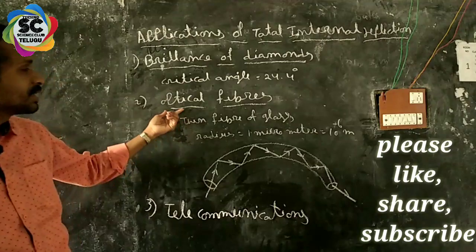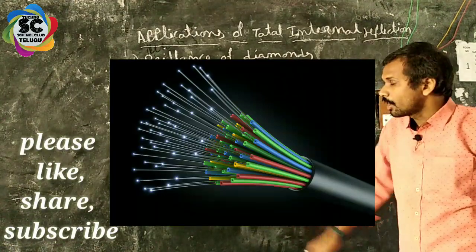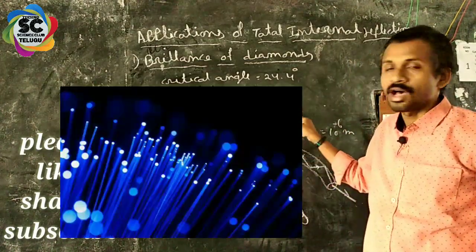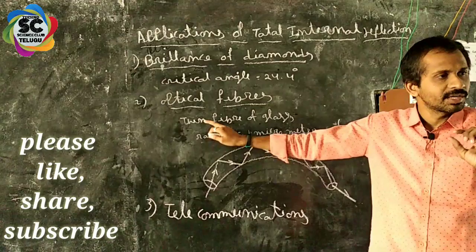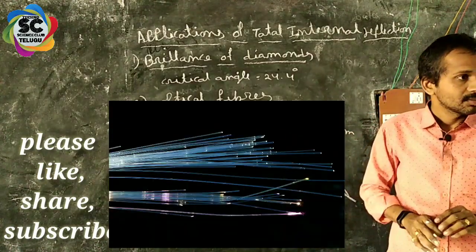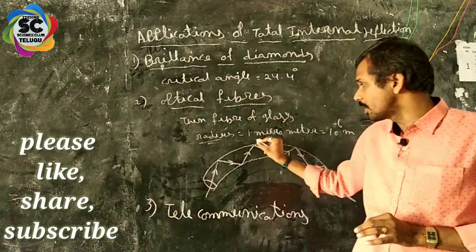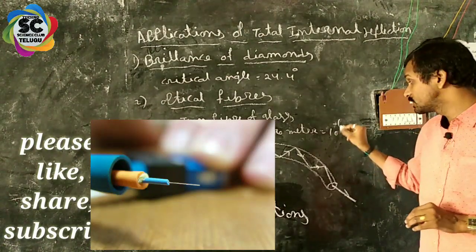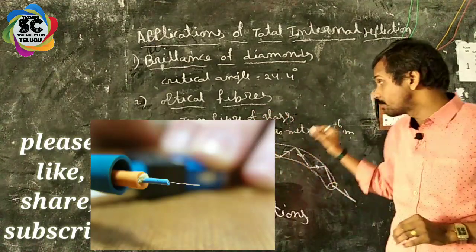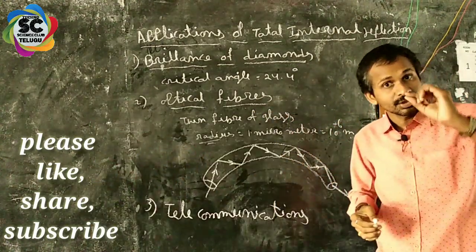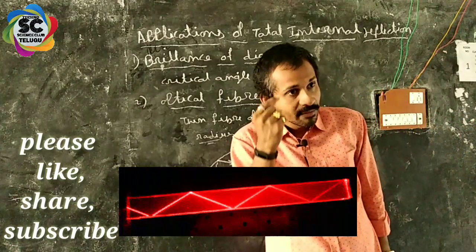The second application is optical fiber. The optical fiber is a thin fiber of glass — a thin glass wire. It has a diameter of 1 micrometer, that is 1 meter by 10 to the power of 6. One micrometer is very small — a very small diameter.